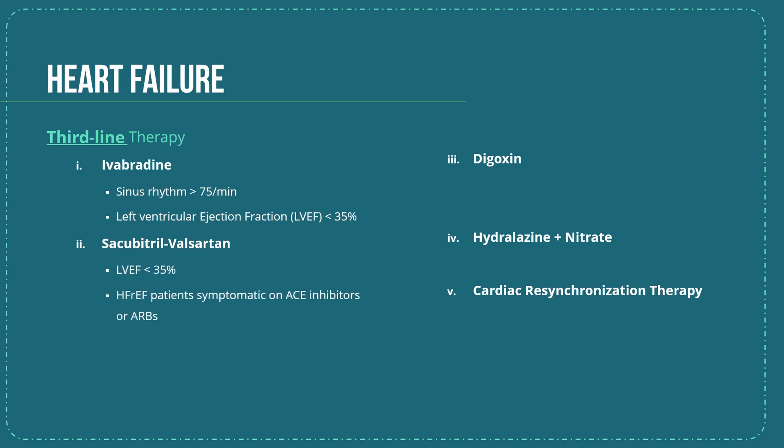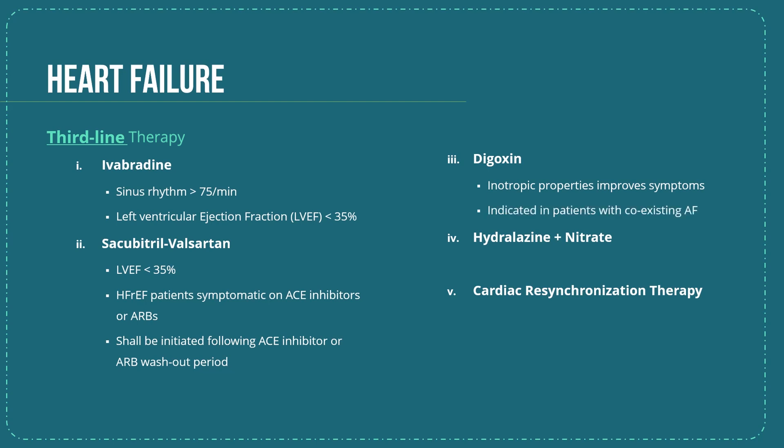For sacubitril-valsartan, the criteria is a left ventricular ejection fraction less than 35 per cent, and it is considered in HFrEF patients who are symptomatic on ACE inhibitors or ARBs. This should be initiated following an ACE inhibitor or ARB washout period. Digoxin has not been proven to reduce mortality in heart failure, but may improve symptoms due to its inotropic properties, and is strongly indicated if there is coexistent atrial fibrillation.